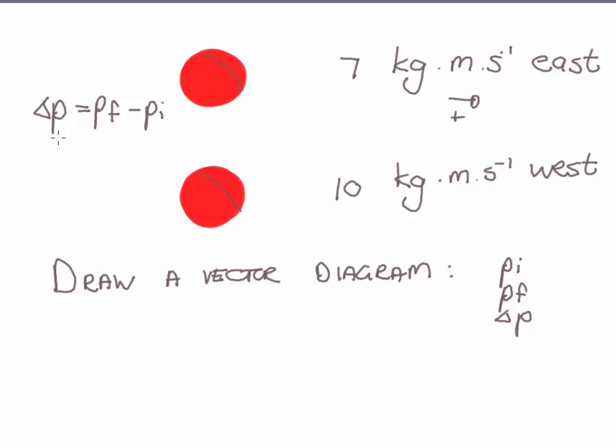When I calculate my change in P, I take P final which was 10 kilograms meter per second west. Because it's west, it becomes negative 10. Then I subtract the positive 7. This gives me a value of negative 17 kilograms meter per second.